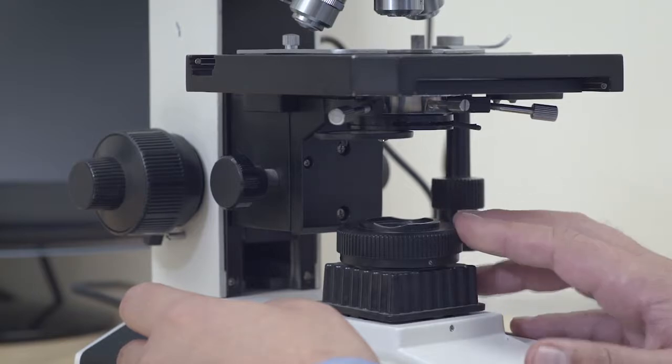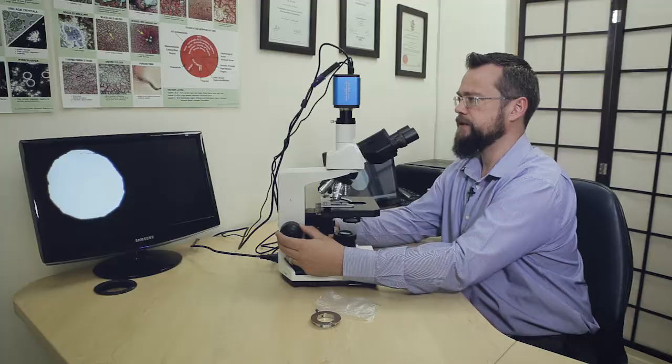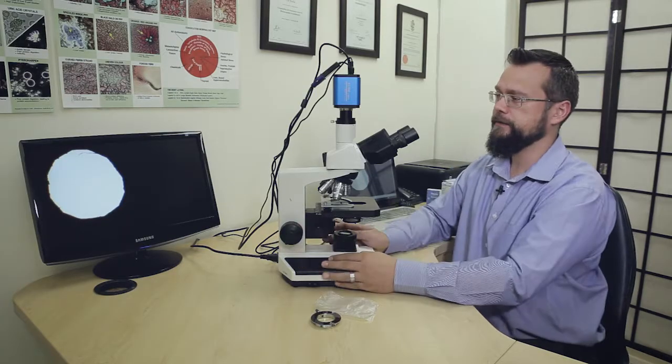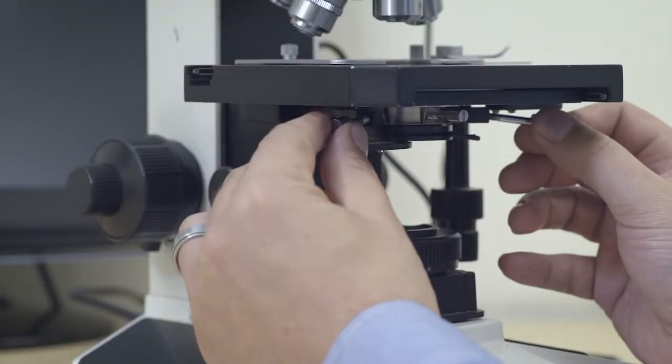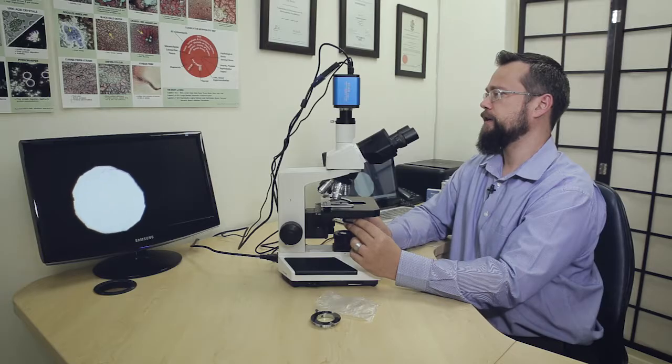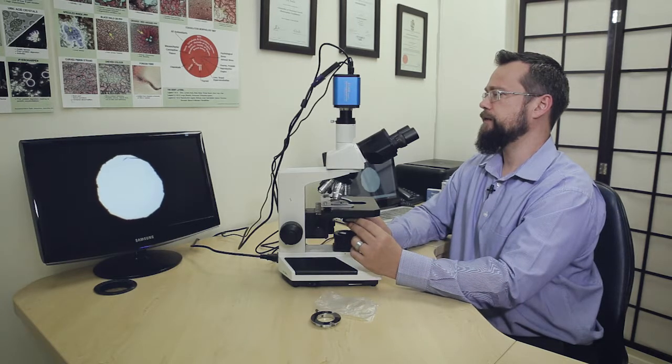We've got the field iris diaphragm completely closed now. Just adjusting the focus so you can see the circle of light very clearly in the viewing field there. And we're just going to continue adjusting the centering knobs until that circle of light is in the center of the viewing field.